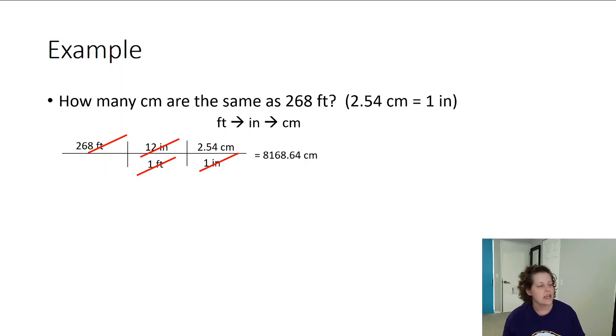If I type this into the calculator, what I'm going to type, if you recall, we said that everything in the numerator is multiplied, and everything in the bottom, the denominator, is divided. Now, in this setup, I only have 1s on the bottom, so I don't even need to divide, because anything divided by 1 is whatever it was. So I'm just going to take 268, multiply it by 12, multiply it by 2.54, and I'm going to get 8,168.64 centimeters.